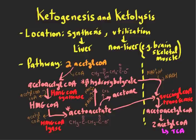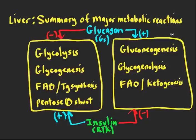Looking at the big picture, ketogenesis is grouped in the liver with all other reactions turned on during fasting. There is a direct relationship between fatty acid oxidation and ketogenesis, because fatty acid oxidation occurs in the liver mitochondria during fasting and provides the acetyl-CoA needed to make ketones. At the same time, we're breaking down glycogen and synthesizing glucose. All of these reactions are turned on because of high glucagon levels in the fasting state, with opposing reactions inhibited.